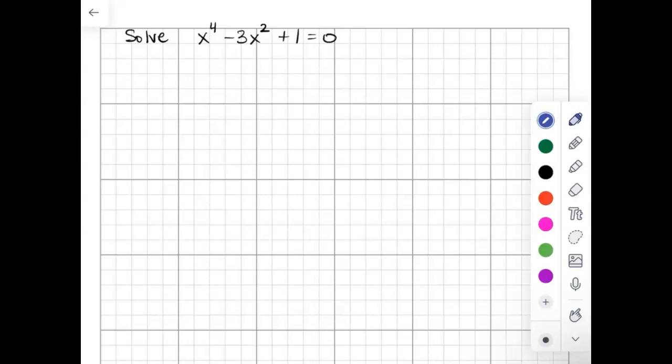We can rewrite this as x to the fourth can be rewritten as x squared squared. Then we can write this as x squared to the first plus one equals zero.